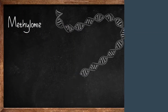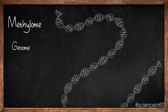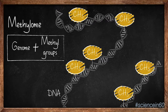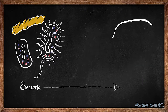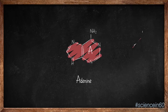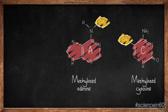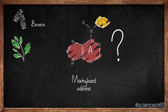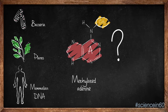The methylome describes the genome-wide modification of DNA nucleotides by the addition of a methyl group. These modifications occur in a wide range of organisms, from bacteria to higher eukaryotes. Adenines and cytosines can be methylated. Adenine methylation is not well characterized, but has been observed in bacteria, plants, and mammalian DNA.